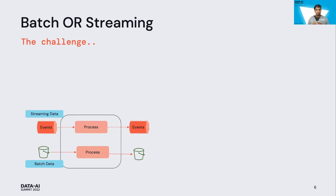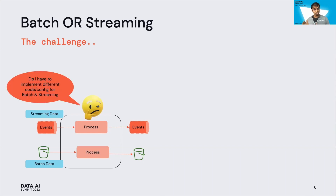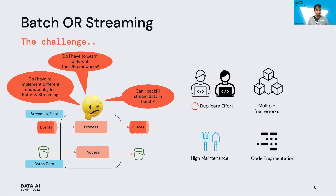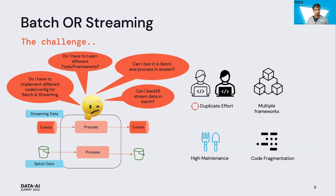The concerns a data worker would have with having different execution engines for batch and streaming include: do we have to implement different code and config? We have to learn different tools and frameworks. Other technological challenges include duplicate effort, high maintenance of dealing with multiple frameworks, and code fragmentation across batch and streaming. There are also use case challenges like: can I backfill streaming data in batch? Can I test or debug data in batch mode for sample streaming data?